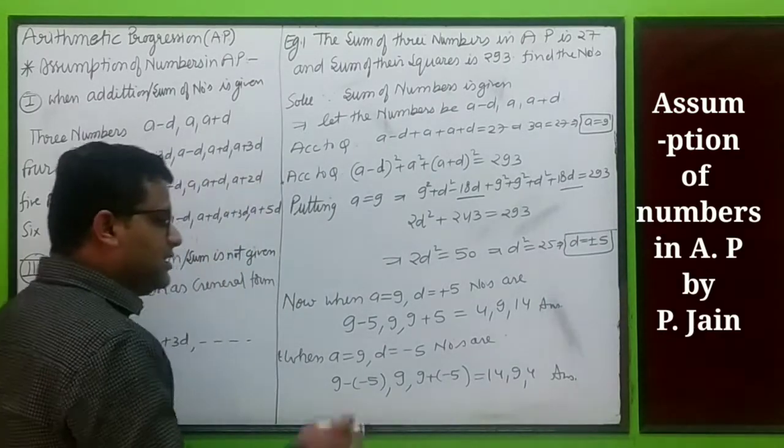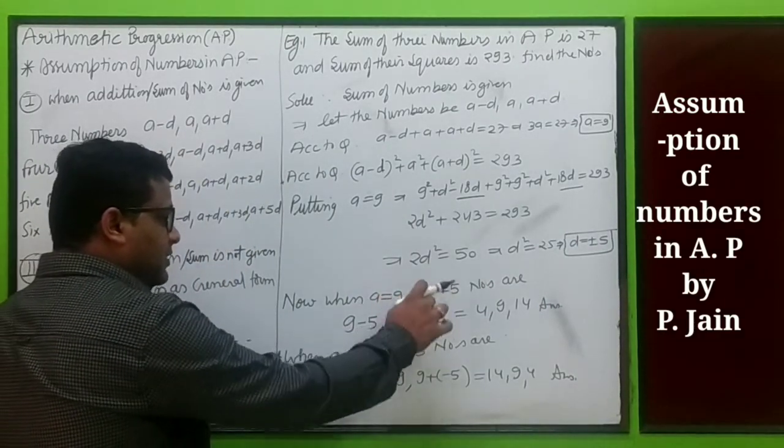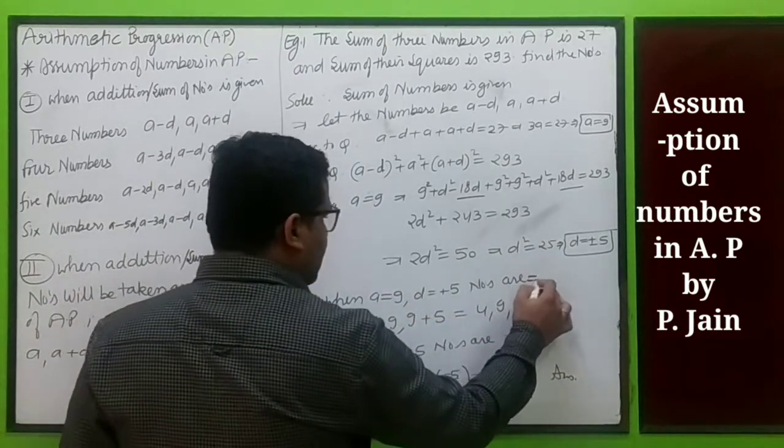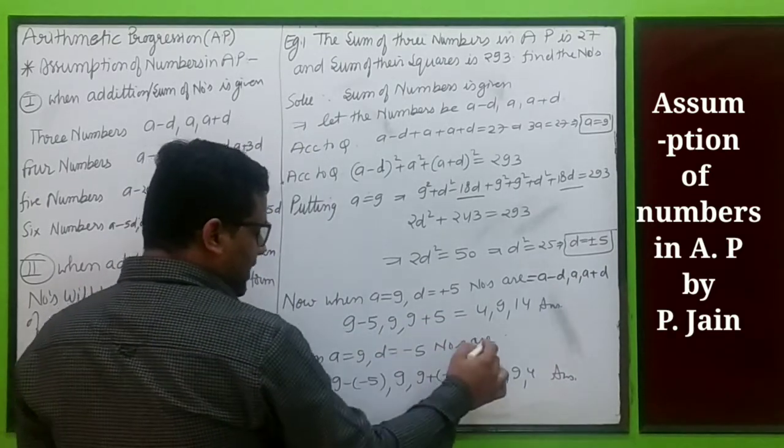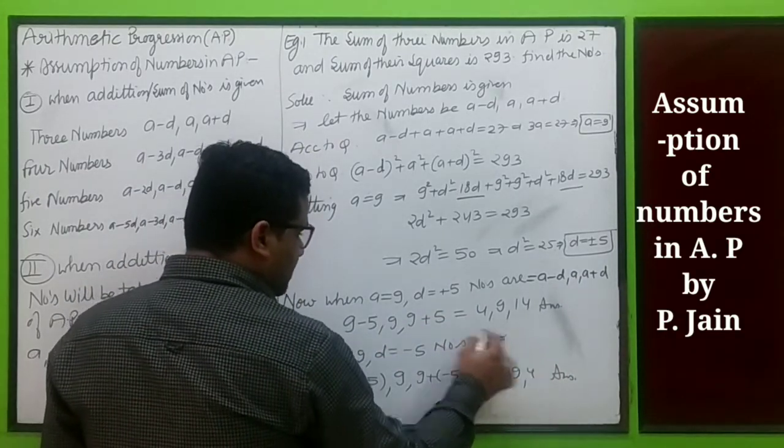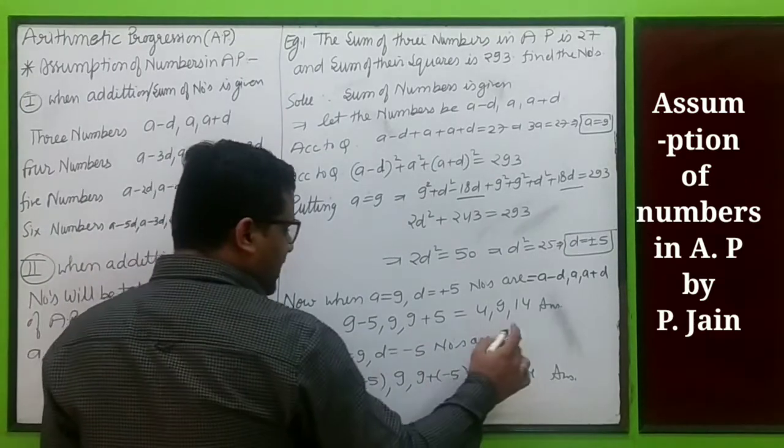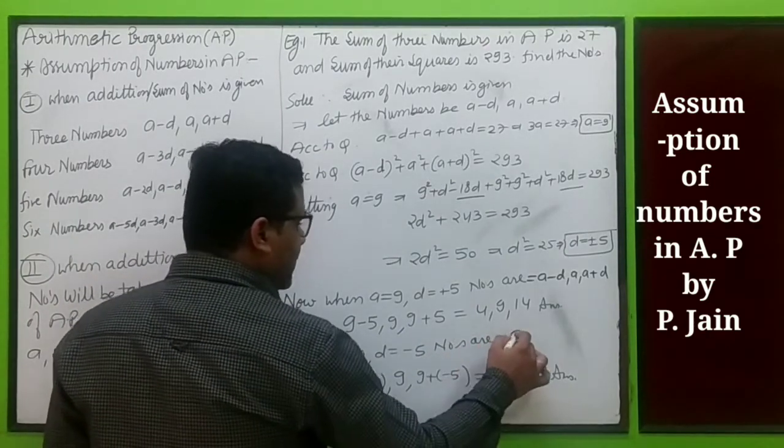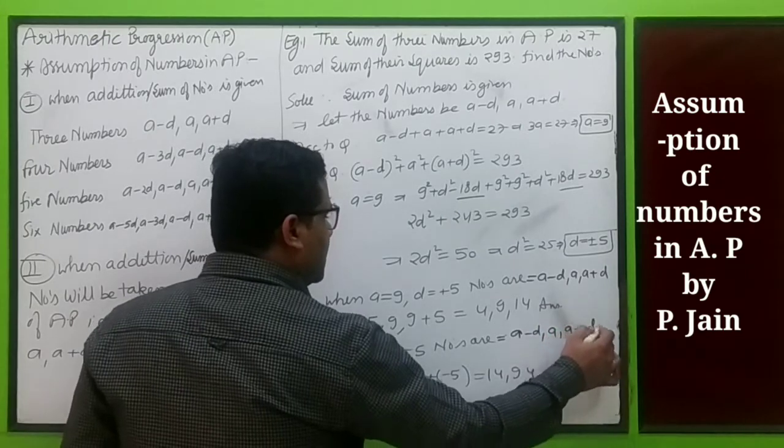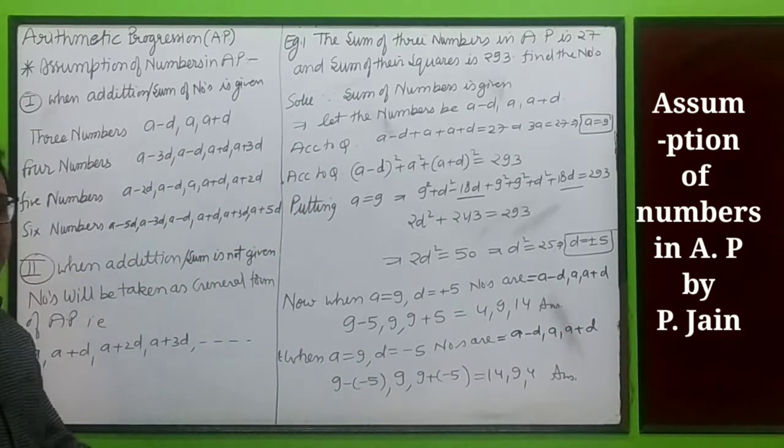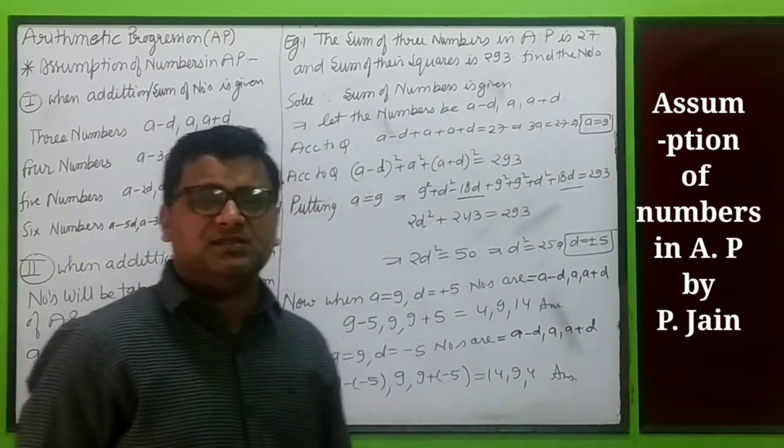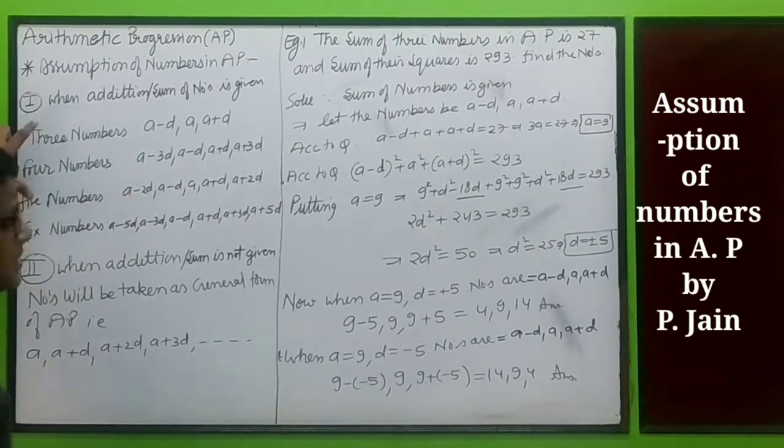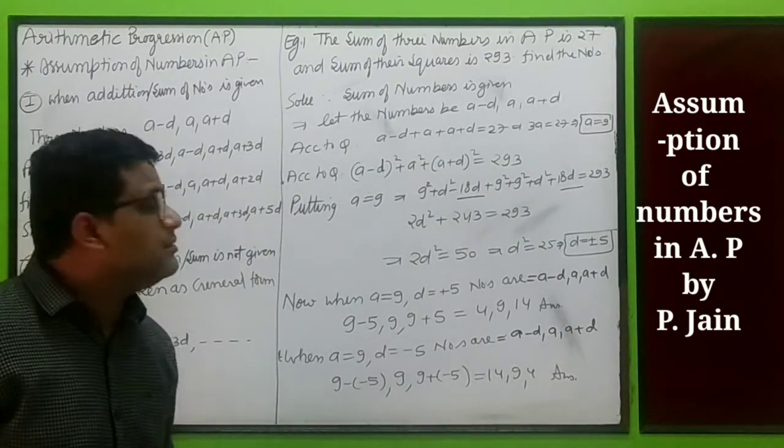Now we have the first term 9 and the common difference plus or minus 5. Two cases: when a is 9 and d is plus 5, the numbers are a minus d, a, a plus d, which are 4, 9, and 14. When a is 9 and d is minus 5, the numbers are 14, 9, and 4. The numbers are the same, just the order changed.